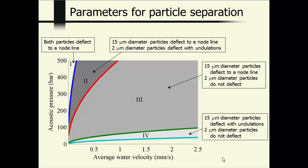So one thing you can extract from this is a map of the behavior of particles for a particular set of parameters. So what I'm showing here is the effect of acoustic pressure on the vertical axis and average water velocity on the horizontal axis. There are different regions. In this region 4 over here, a 15 micrometer particle deflects with undulations and the 2 micrometer particles don't deflect at all.